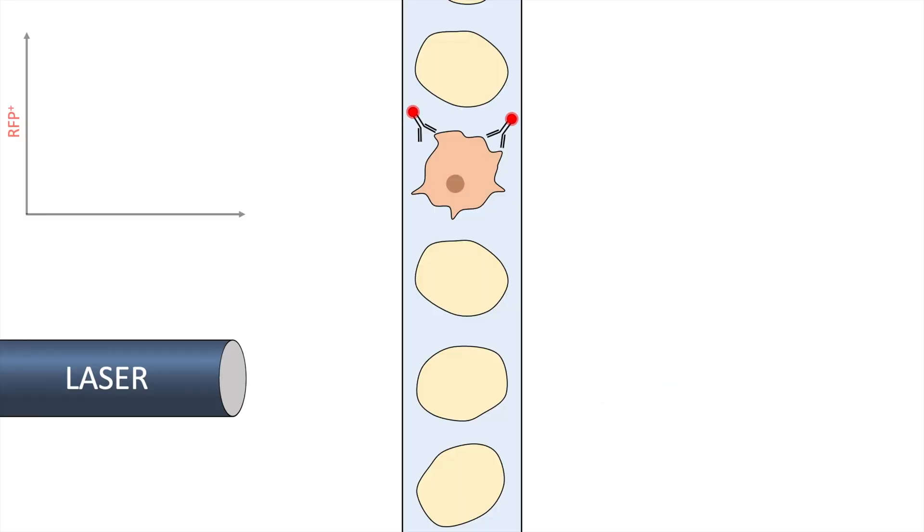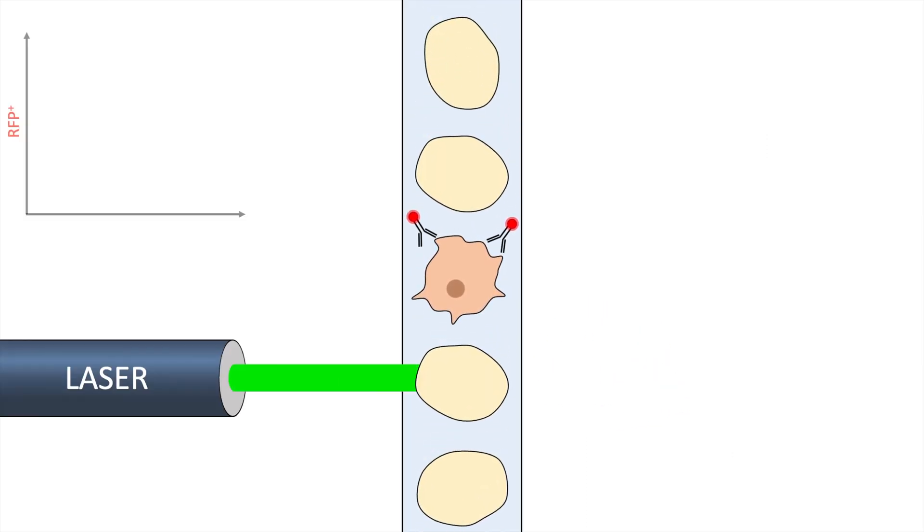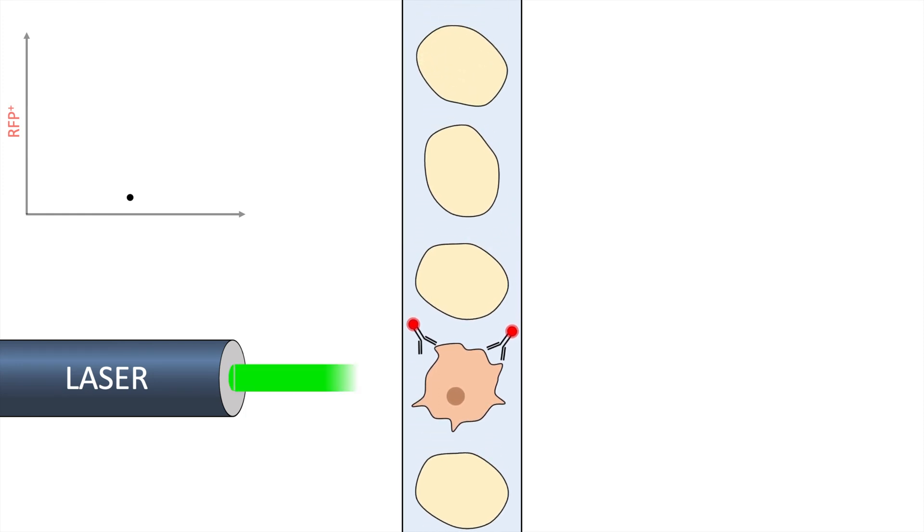Lasers with distinct wavelength can excite various fluorophores. This cell does not emit a fluorescent signal and a data point is generated. The fluorescent label of the antibodies bound to that cell here are excited and fluorescent emission is detected. The differing characteristic is translated into a second data point.